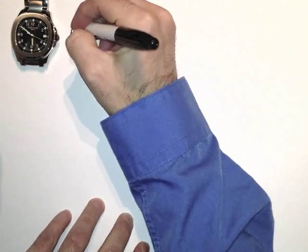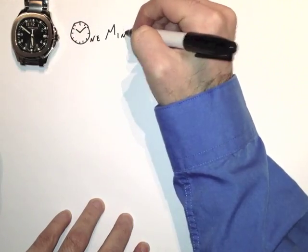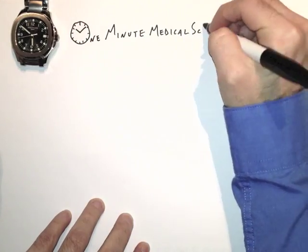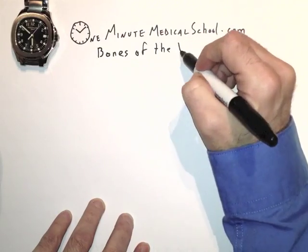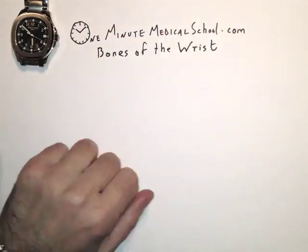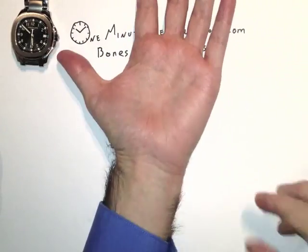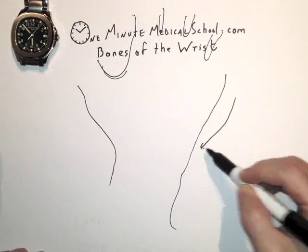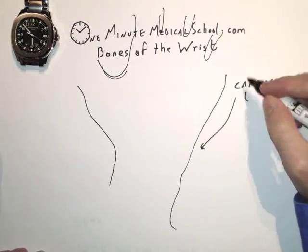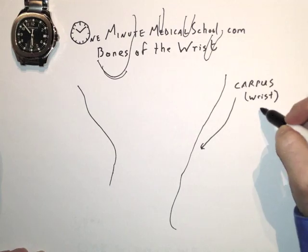The wrist is the complex organ in between your arm and your hand that allows such freedom of action to your hand. Let's look at the wrist bones today, or as we call it in medical speak, the carpus.